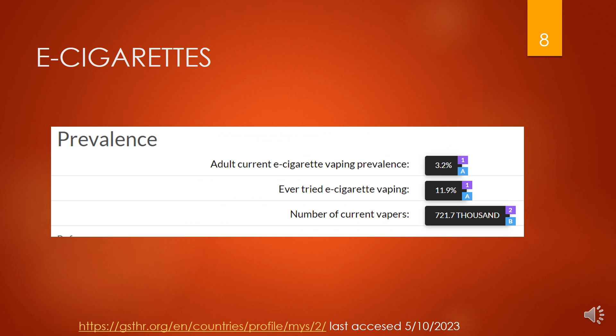For e-cigarettes, that is vaping: adult current e-cigarette vaping prevalence is 3.2%. Those who have ever tried e-cigarette vaping is 11.9%. The number of current vapers is 721,000.